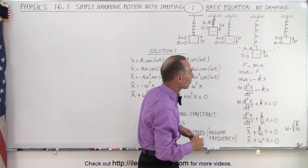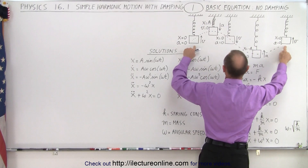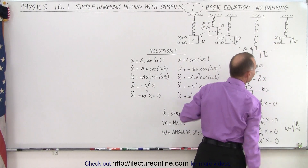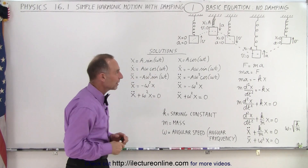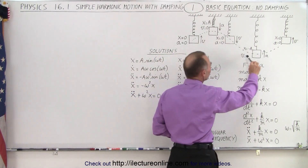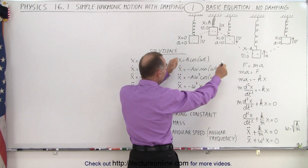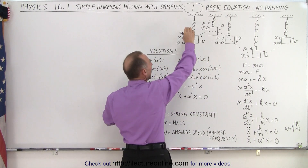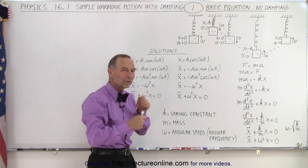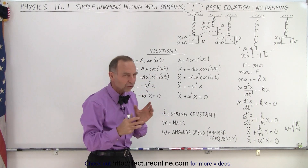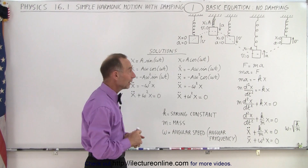The mass reaches its maximum elongation below the equilibrium point when x equals negative amplitude. At this moment velocity is zero and acceleration is upward. It then returns to the equilibrium point with an upward velocity, and the cycle continues. Notice there's a relationship to a sine or cosine function — if you attached a pencil to the mass and moved paper past it at constant speed as it oscillates, you would trace out a sine or cosine wave.